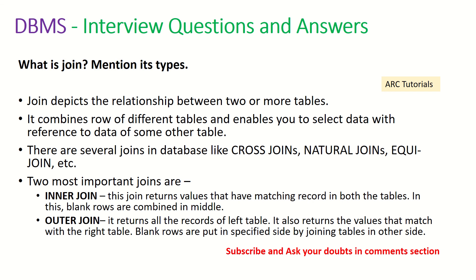What is a join? Mention its types. A join depicts a relationship between one or more tables — when you want to query multiple tables, you use joins. It combines rows from different tables and enables you to select the data you want. There are several types: cross join, natural join, inner join, etc. The two most important in practice are inner join and outer join. Inner join returns only values with matching records in both tables, while outer join returns all records from the left table and appends matching values from the right table.